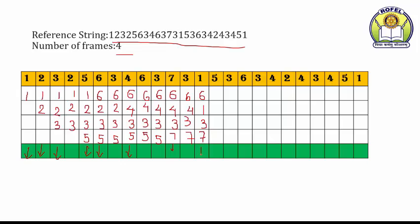Then 5 — 5 ke liye vapas se: 1 is used recently, before that 3 was used, before that 7, then 3, then 6. So among these, 6 is the oldest. So we can replace 6 by 5. Frames: 5, 1, 3, 7. That is a page fault.